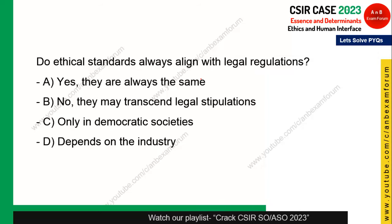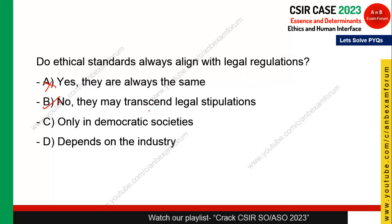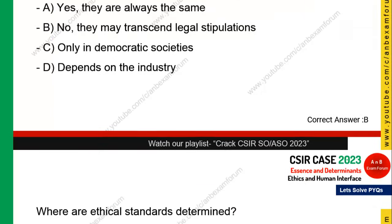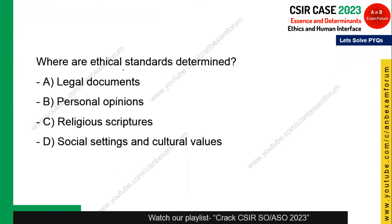Next question: do ethical standards always align with legal regulation? No — they may transcend legal stipulation. For example, in India, homosexuality now comes under legal regulation, but previously it had no legal stipulation. Similarly, dress codes in temples are considered ethical but do not always align with legal stipulation. Option B is the correct answer.